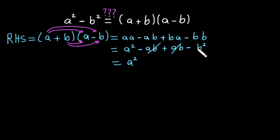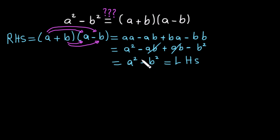This equals the left-hand side. We started from the right-hand side and ended up with the left-hand side, a squared minus b squared. So we have completed the algebraic proof that a squared minus b squared equals a plus b times a minus b. Feel free to comment below if you have any questions or suggestions. See you in the next video.